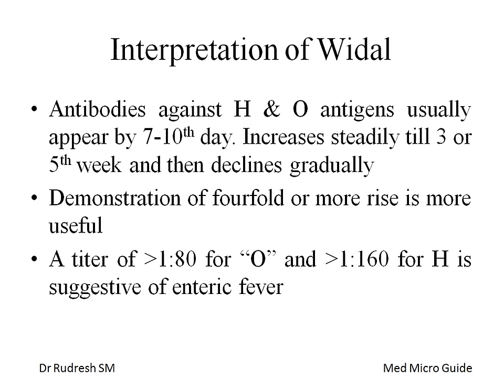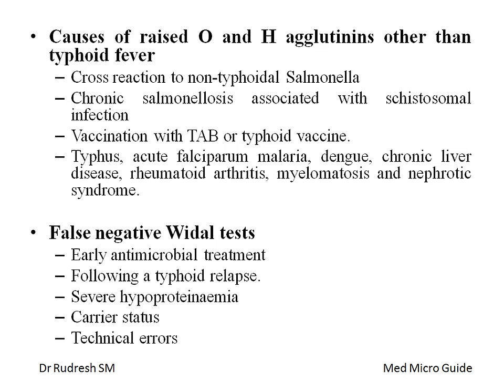With paired serum samples — one in the second week and one seven to ten days later — a four-fold rise in titers indicates an ongoing infection. Some textbooks consider a two- to three-fold rise as a positive Widal test. False positive results can occur in non-typhoidal Salmonella infections, chronic salmonellosis with schistosomal infection, TAB or typhoid vaccination, typhus fevers, acute falciparum malaria, dengue, chronic liver disease, rheumatoid arthritis, myeloma, and nephrotic syndrome.